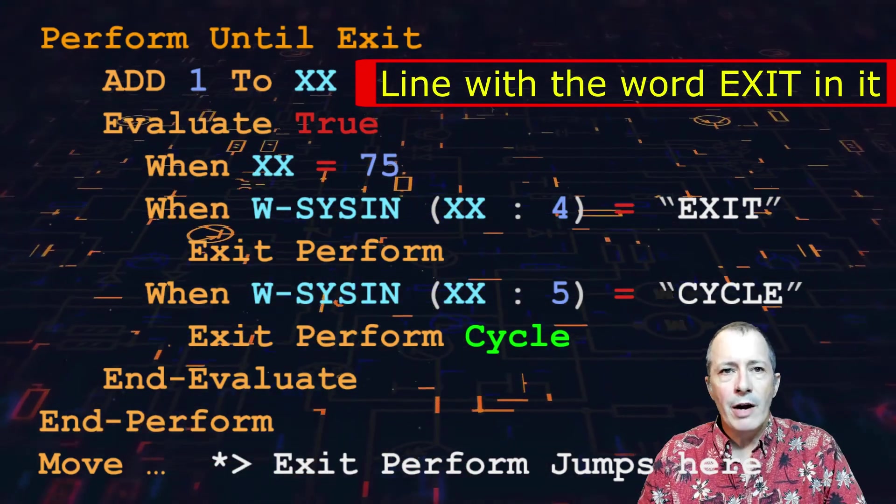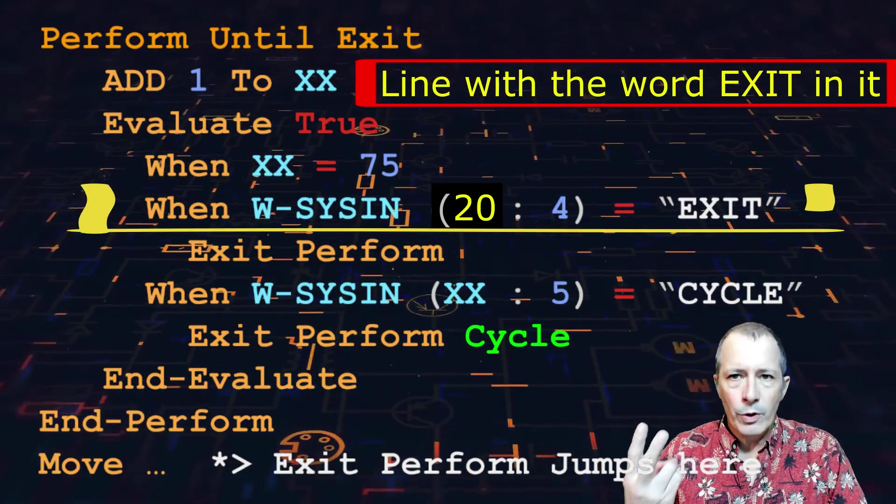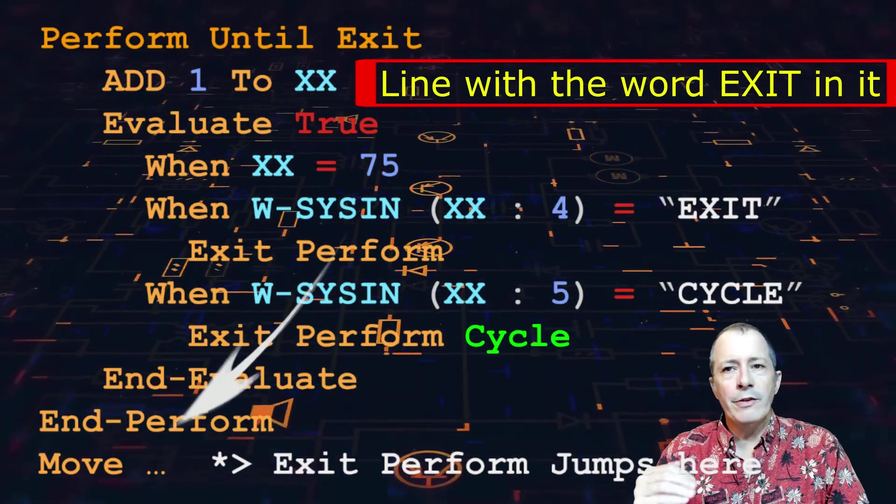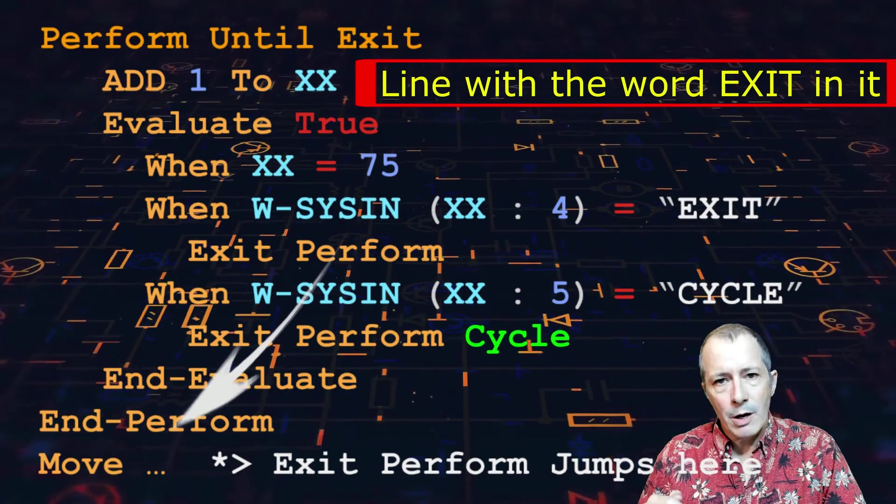When xx reaches a value of 20, the second when becomes true. The exit perform is executed. Control transfers to the move verb at the bottom of the string.